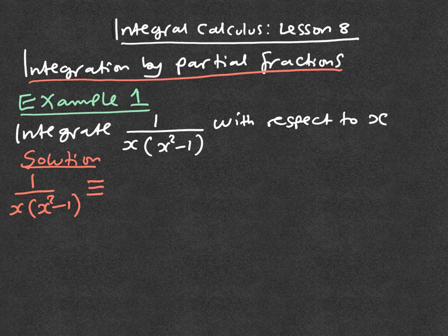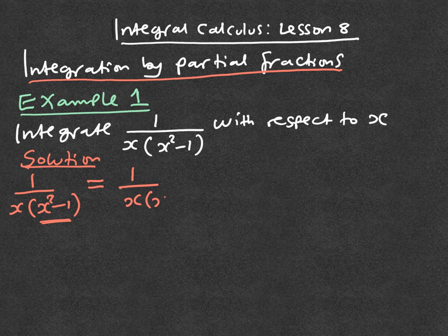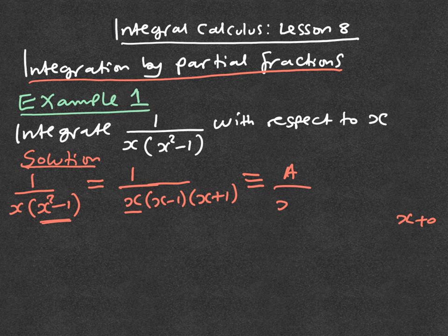We have a product of factors in the denominator. There is something you have to know: x squared minus 1 is a quadratic and it factorizes. So this is 1 over x times x minus 1 times x plus 1 — that's the product of three linear factors. Now in partial fractions, x is linear, so it is A over x plus B over x minus 1 plus C over x plus 1.